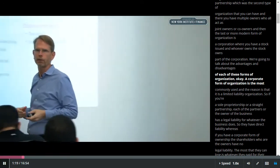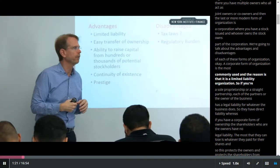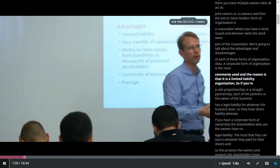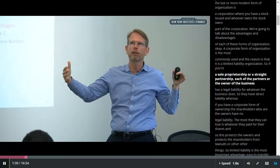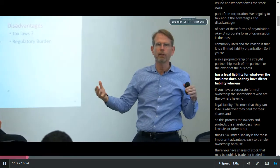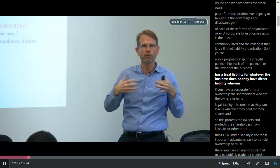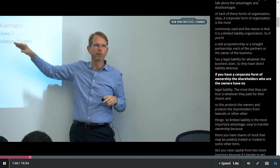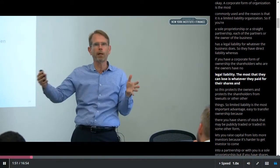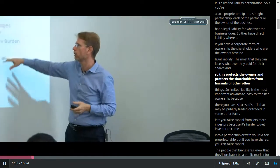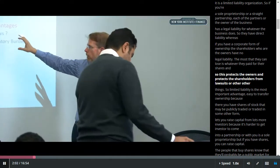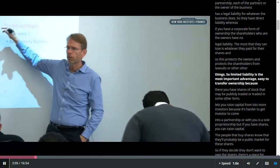The corporate form of organization is the most commonly used, and the reason is that it is a limited liability organization. If you're a sole proprietorship or a partnership, each of the partners or the owner of the business has a legal liability for whatever the business does — they have direct liability. Whereas if you have a corporate form of ownership, the shareholders who are the owners have no legal liability; the most that they can lose is whatever they pay for their shares. This protects the owners and shareholders from lawsuits or other things. So limited liability is the most important advantage.